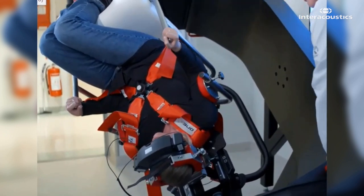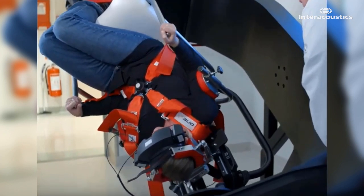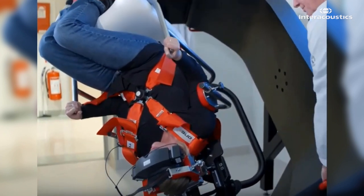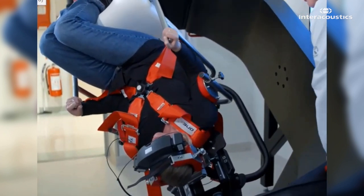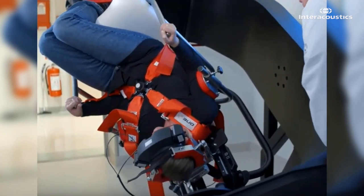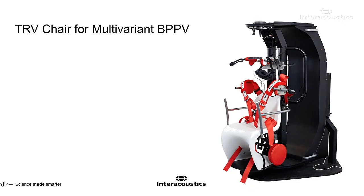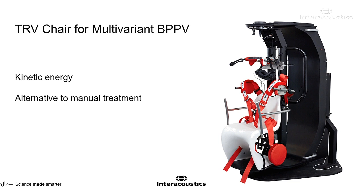You can see Dr. Magnuson lightly banging the patient's head against those shock absorbers. That's what forces kinetic energy into those crystals and helps them move. It's important to have an accurate diagnosis. If we can't treat — and sometimes we even make it worse when we try on our own — we can always move into a TRV chair for more accurate repositioning.